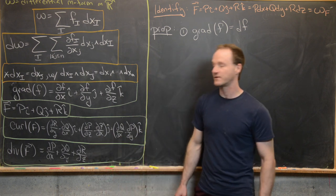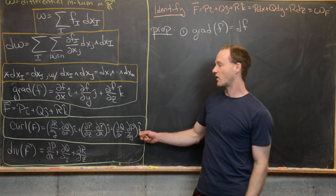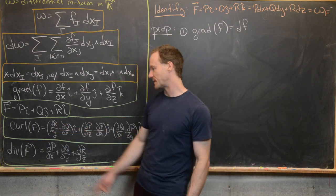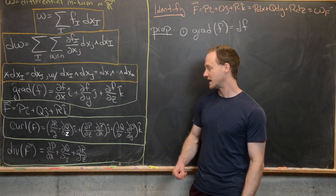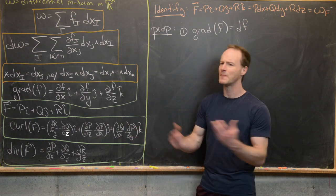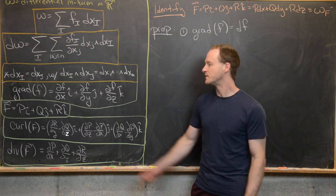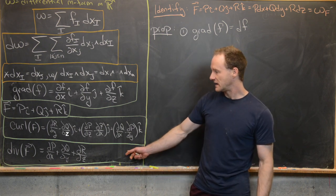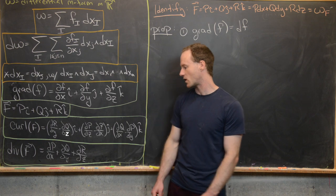If we have a vector field F = P î + Q ĵ + R k̂, then the curl of F is given by: in the i-direction, ∂R/∂y − ∂Q/∂z; in the j-direction, ∂P/∂z − ∂R/∂x; and in the k-direction, ∂Q/∂x − ∂P/∂y. There's a calculational method involving crossing the differential operator into the vector field. The divergence of F is given by ∂P/∂x + ∂Q/∂y + ∂R/∂z — a scalar function.